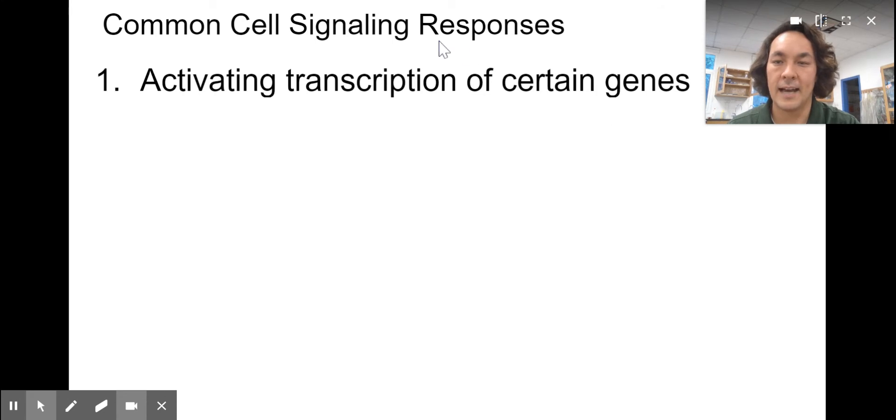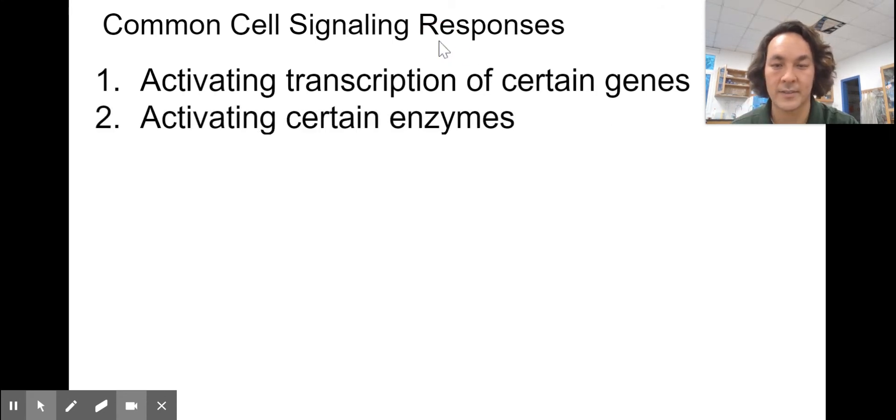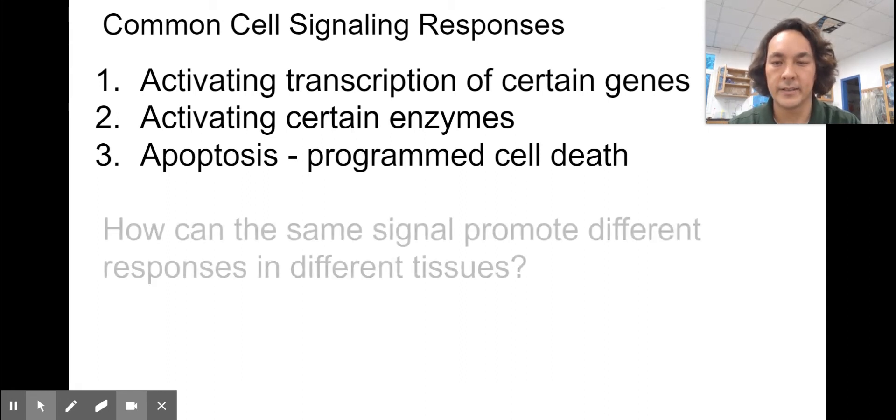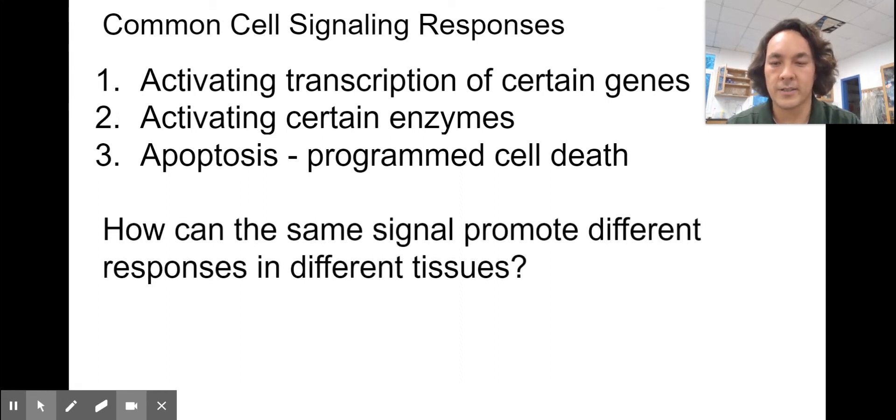Let's talk about some of the outcomes that can happen. You can activate the transcription of certain genes. You can activate certain enzymes. We've seen examples of both of those. The enzyme that was activated in the previous slide was glycogen phosphorylase, and other genes might cause the cell to divide. You can also activate apoptosis or cell death. They can say, okay, we need to get rid of this cell.